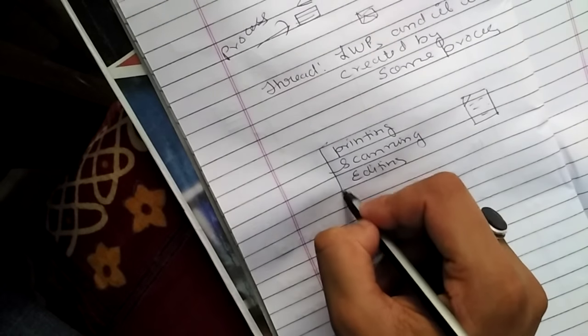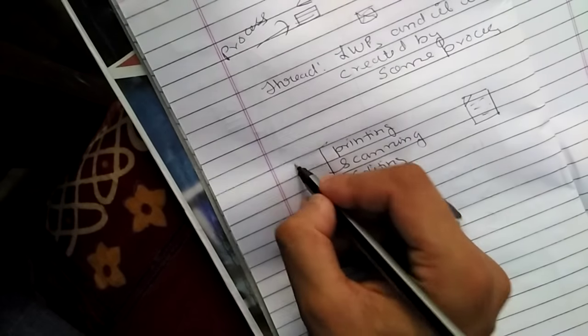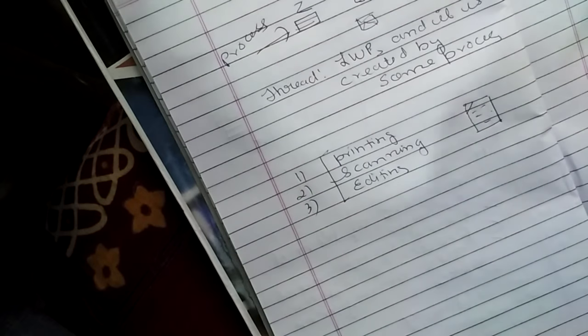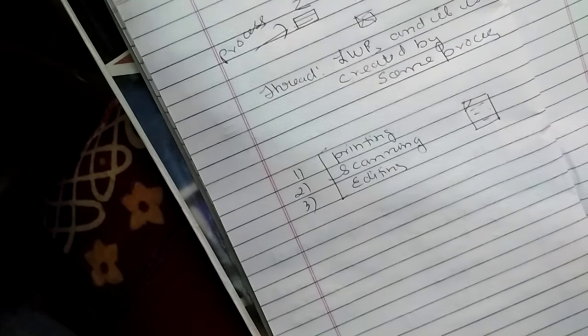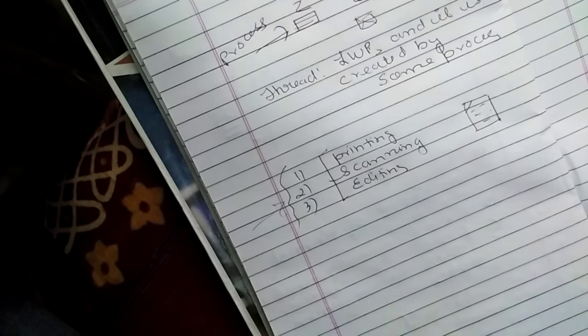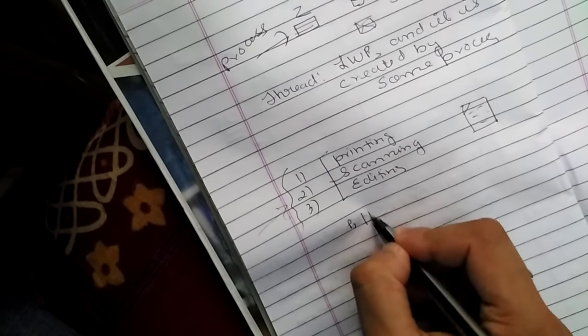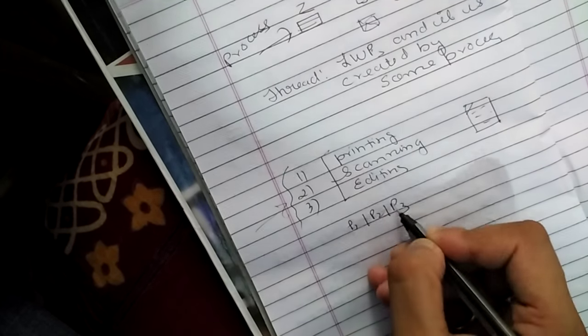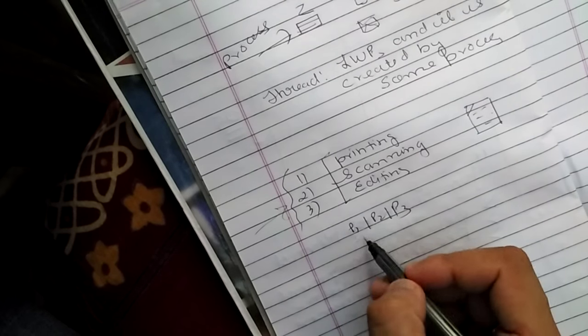So in order to accomplish this task, I have to make three processes. First one is printing, second one is scanning, and third one is editing. But now, because of three processes, there will be two context switches between them.